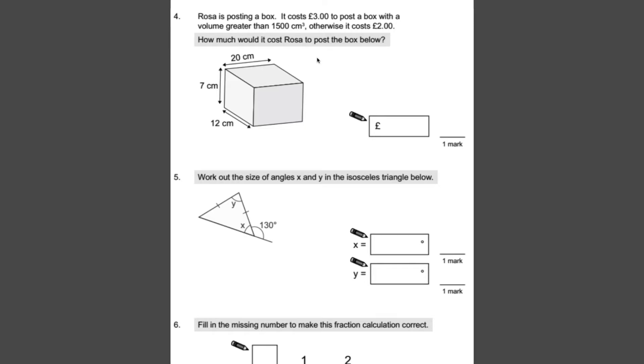Number four, Rosa is posting a box. It costs 3 pounds to post a box with a volume greater than 1,500 centimeters cubed. Otherwise it costs 2 pounds. How much would it cost Rosa to post the box below? So first of all, we need to work out its volume. And in order to do that, we do the base times the height times by the width, the depth. We times those together.